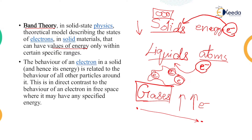The behavior of an electron in a solid, and hence its energy, is related to the behavior of all other particles around it. Always remember, solids are tight-knit together — the particles are beside each other, and because of this, the behavior of one particle depends on the behavior of the other particle. This is in direct contrast to the behavior of electrons in free space, where it may have a specified energy.